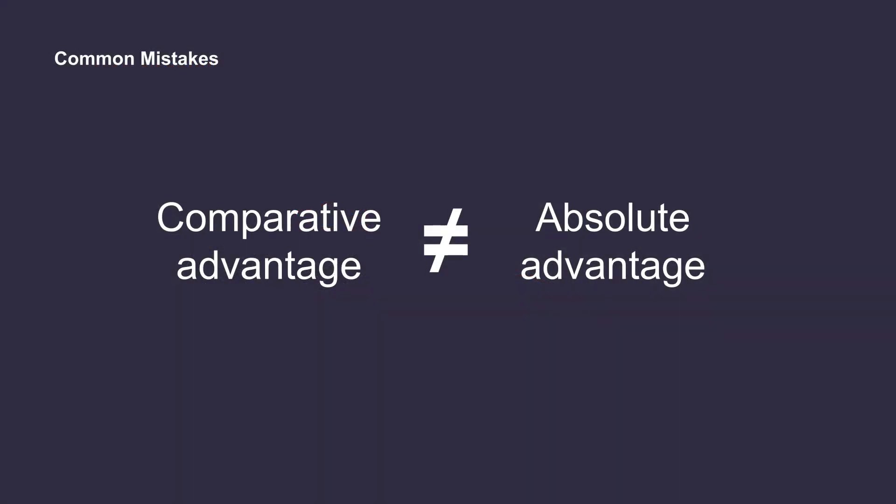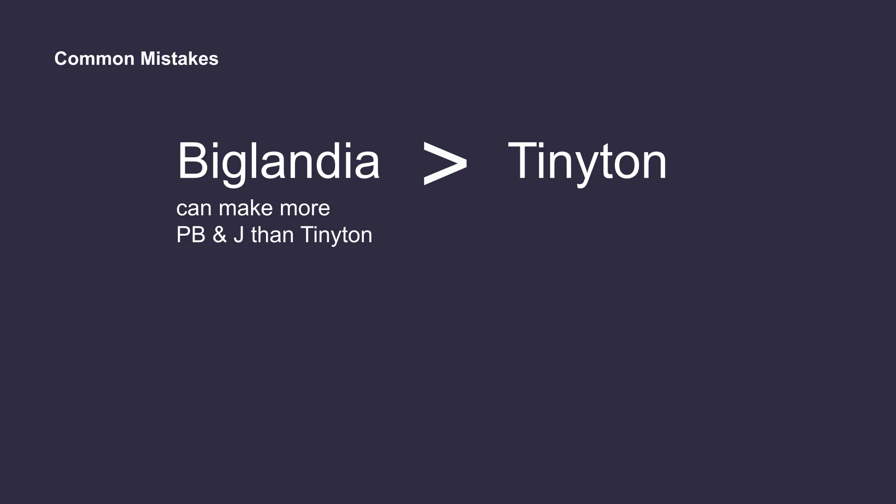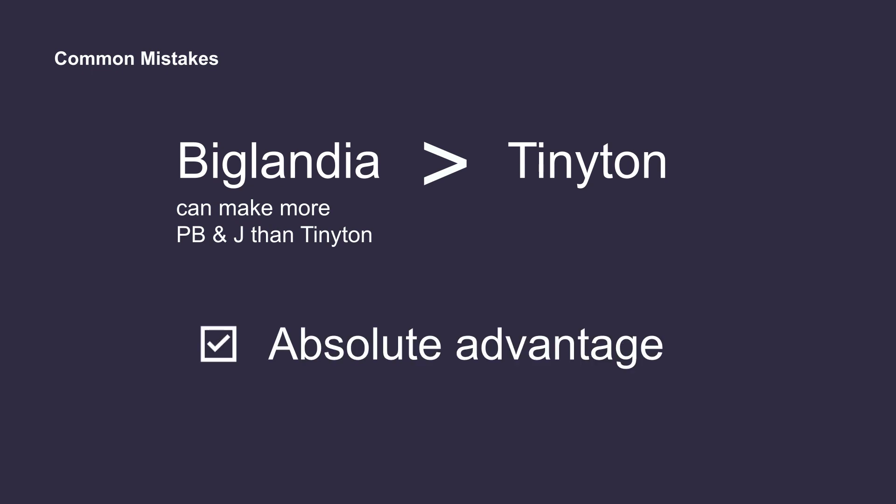A common mistake that many people make — and one that I definitely used to make — is mixing up comparative advantage with absolute advantage. Notice in this example, Biglandia can make both peanut butter and jelly better than Tinyton in a year. So, Biglandia has the absolute advantage in making both.